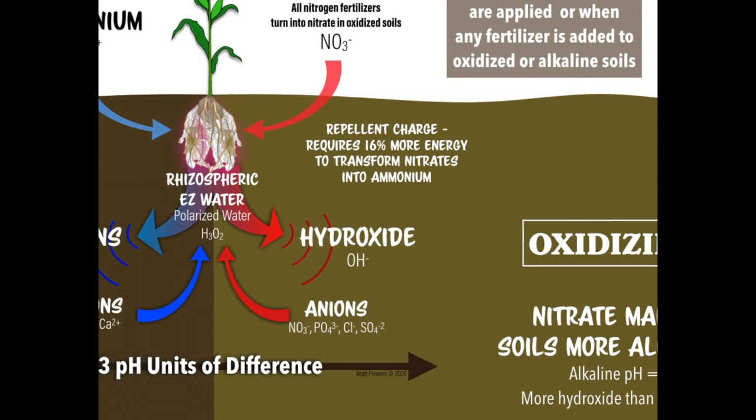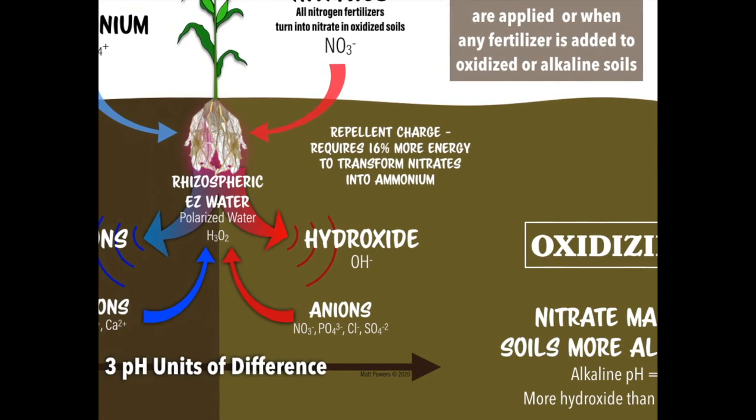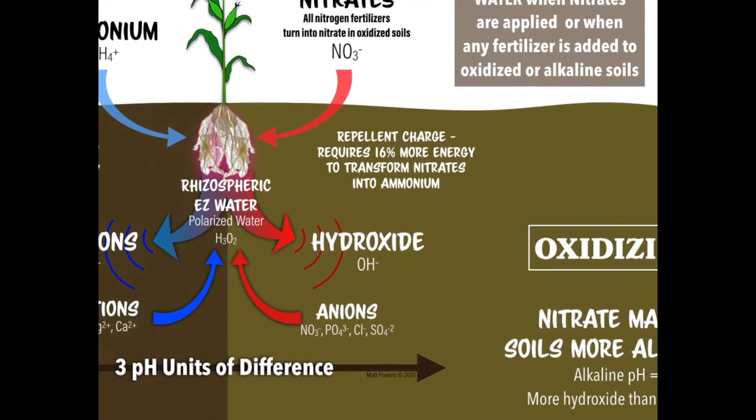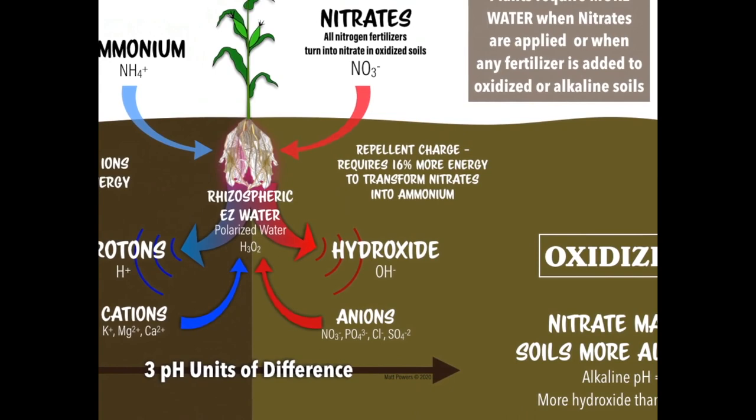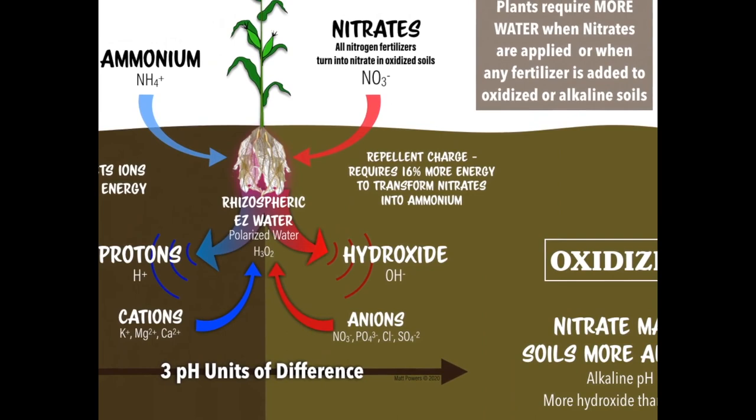Meanwhile, those plants are nothing but water and nitrates — extra-thin cell walls full of nitrates. Those easily penetrated walls and nitrates feed pests, from pathogenic fungi to sucking bugs like grasshoppers, hornworms, and aphids — all feeding on nitrates and other oxidized compounds.